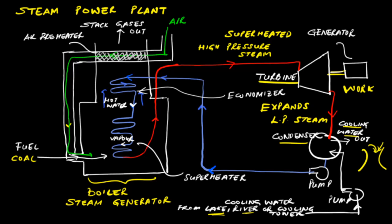Typically, steam power plants use coal as fuel; however, the same cycle can be used in a nuclear power plant as well. In a nuclear power plant, the boiler is replaced by the nuclear reactor and the fuel is not coal but fissionable material such as uranium or plutonium.